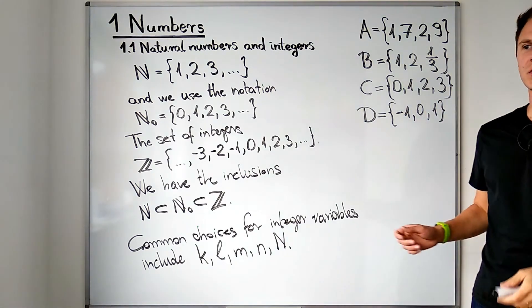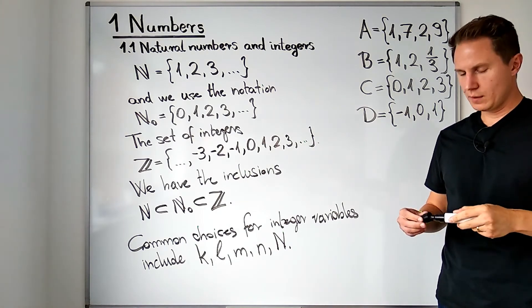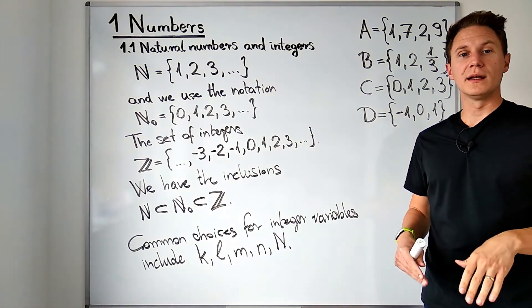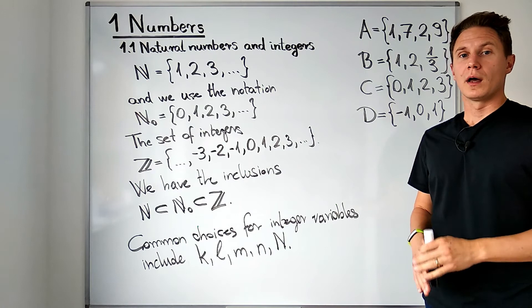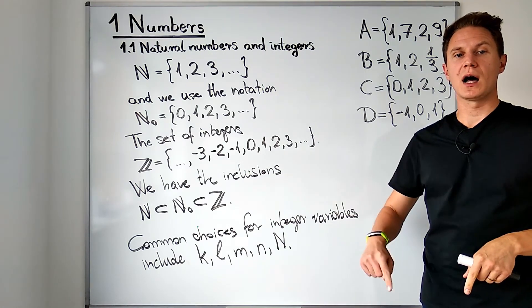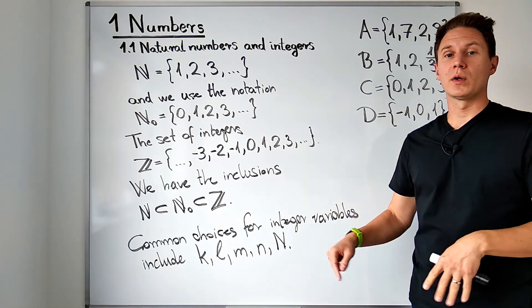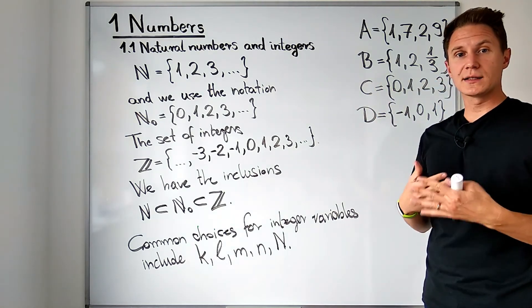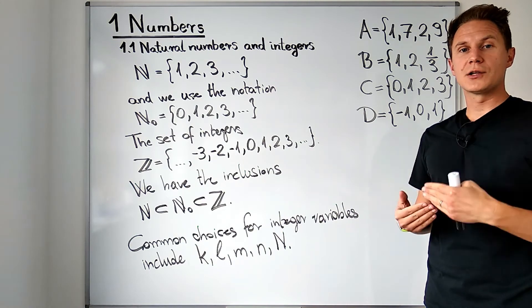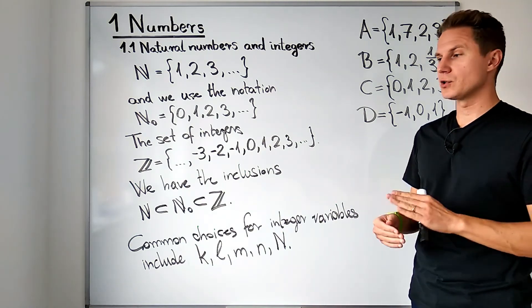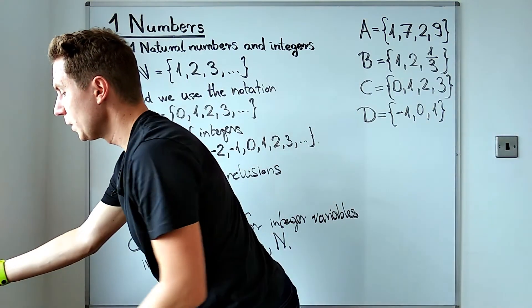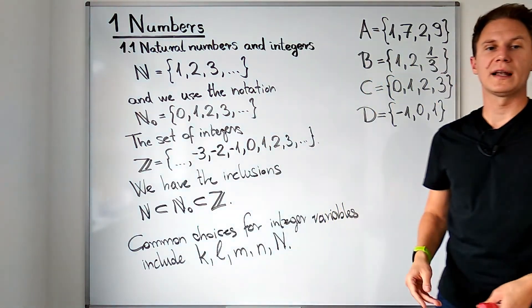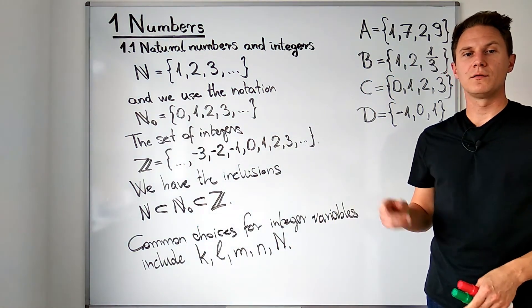So what I would like you to do is to pause the video and if it's opened in item pool you will see the same question asked below the video. What I would like you to do is to select the set or sets which contain only natural numbers. Pause the video and once you have selected the set I will give you the answer.